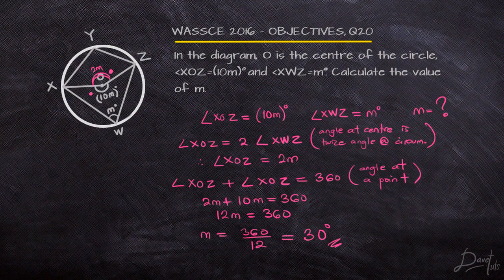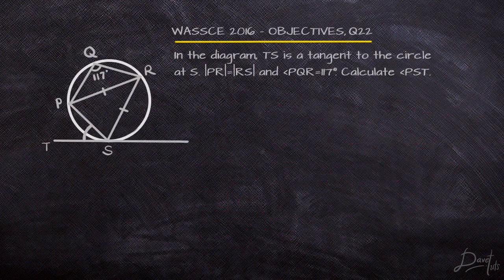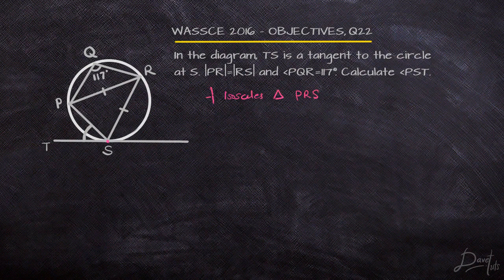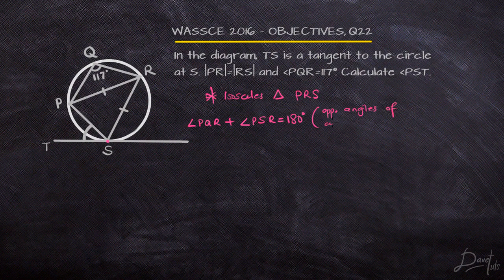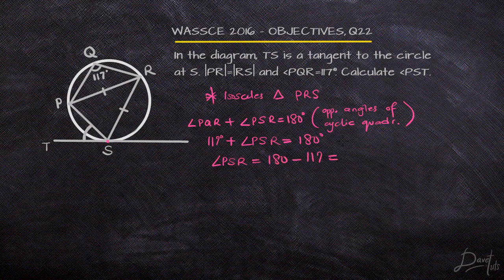Just by having an understanding of our theorems and how to apply them, we can find solutions to the questions given to us. Observing and knowing the principles we need to apply will always help us. Here we are given an isosceles triangle, meaning two sides are equal, so the base angles are also going to be equal. Angle PQR and angle PSR are opposite angles of the cyclic quadrilateral, so they sum to 180 degrees. We are given PQR as 117 degrees, so solving for PSR gives us 63 degrees.